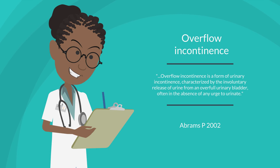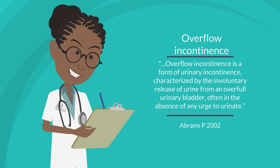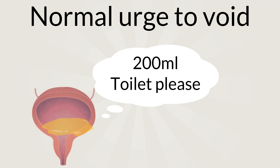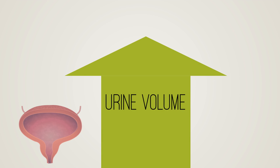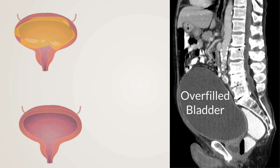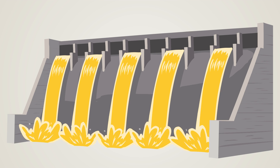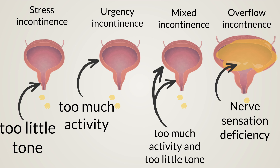The final type of incontinence is overflow incontinence, characterized by involuntary release of urine from an overfull urinary bladder, often in the absence of any urge. The normal bladder can fill up to about 200 milliliters of fluid before the patient has a strong urge to void. Patients with overflow have faulty sensory nerves and cannot feel when their bladder is full. Urine thus slowly collects in the bladder, much like water collecting behind a dam in a river. Once the pressure is sufficient to overcome the blockage in the outlet, micturition occurs — like water flowing over the top of a dam once it is full. Let's review the pathophysiology and pathology of urinary incontinence together.